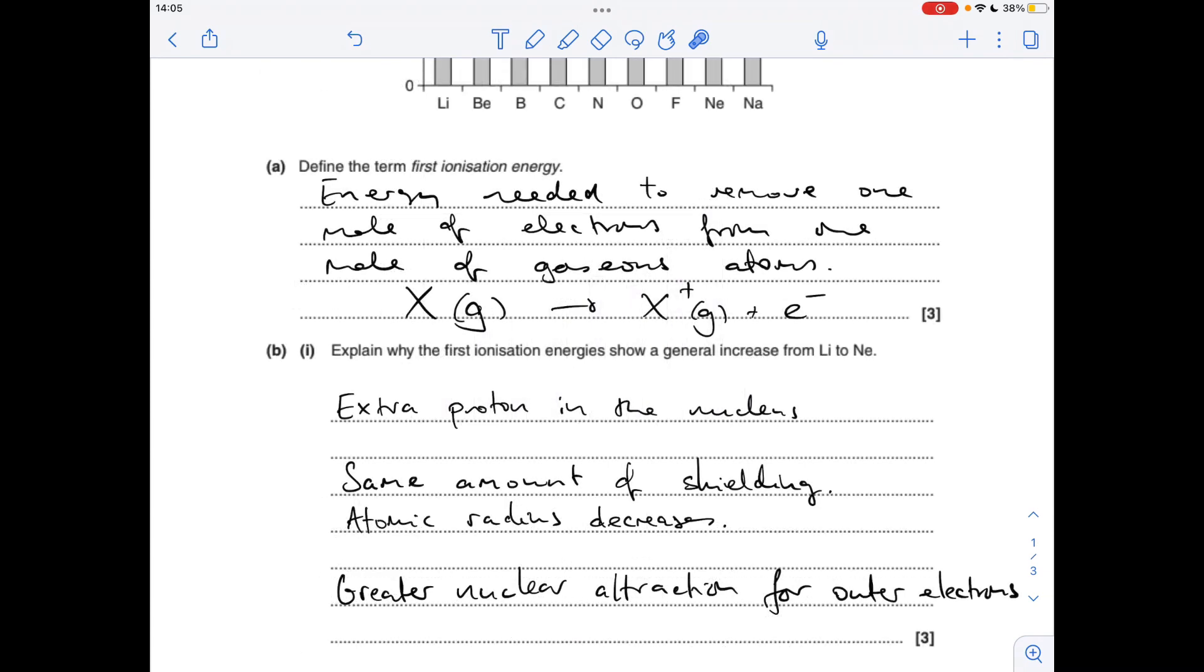Part B: explain why the first ionisation energies show a general increase going across the period. That's because we have an extra proton in the nucleus each time, we've got the same amount of shielding, the atomic radius is decreasing, and therefore there's a greater nuclear attraction for the outer electrons.